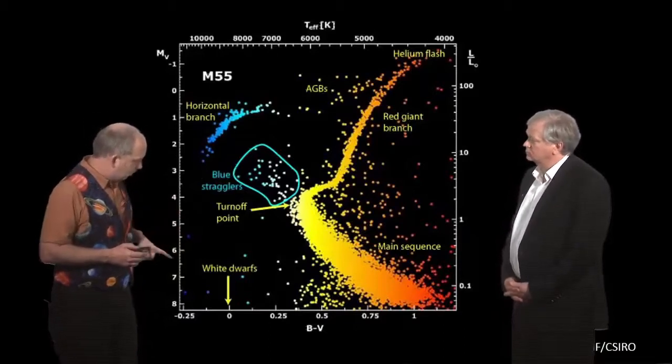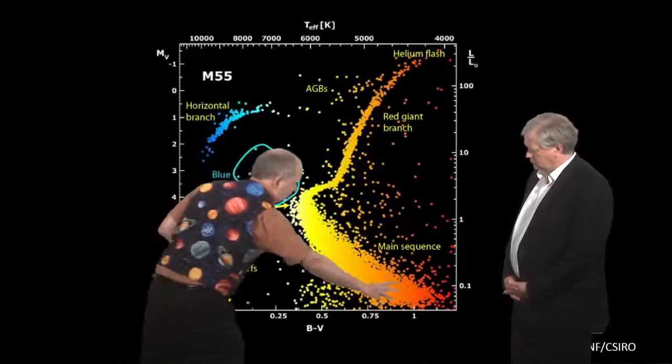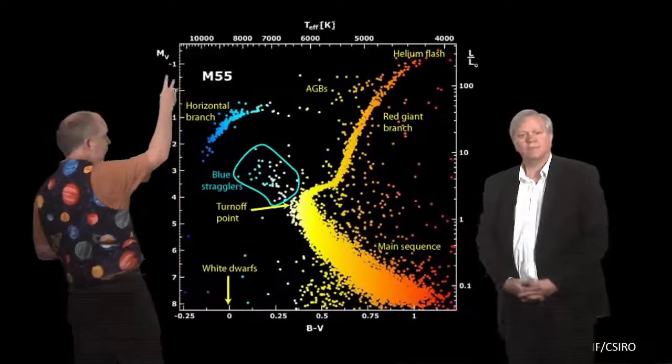Now, this is an HR diagram, a Hertzsprung-Russell diagram, so we're plotting colour here with blue stars on this side and red stars on that side. Low mass, high mass, typically when they're on the main sequence. And luminosity up here.